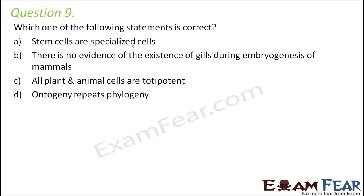Option C: all plant and animal cells are totipotent. Totipotency is the ability to divide. Not all plant and animal cells have the ability to divide. For example, stem cells are totipotent, but that doesn't mean all cells in our body are totipotent. In plants, only the meristematic cells are totipotent — that is why stems and roots grow. So only some cells are totipotent, but not all plant and animal cells.